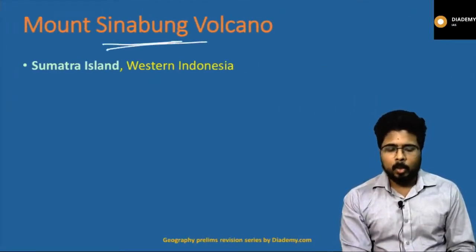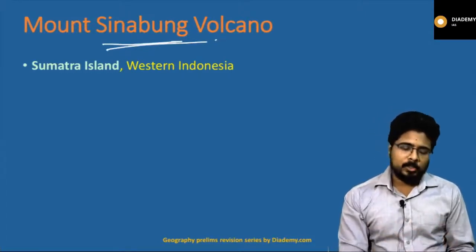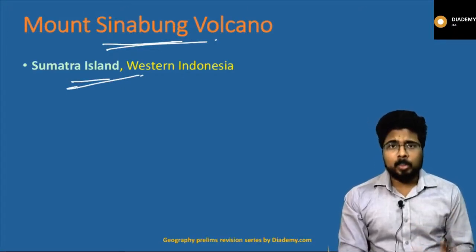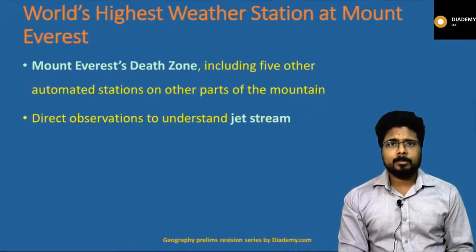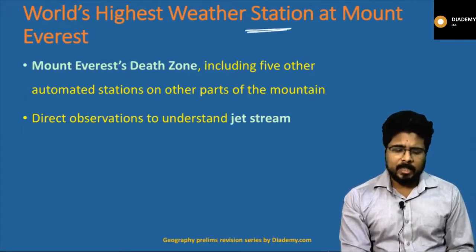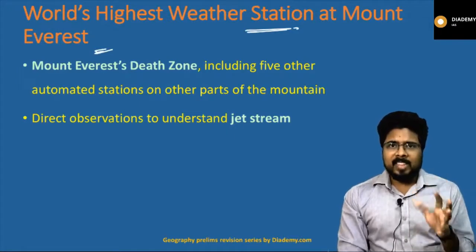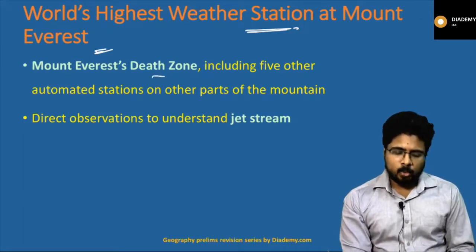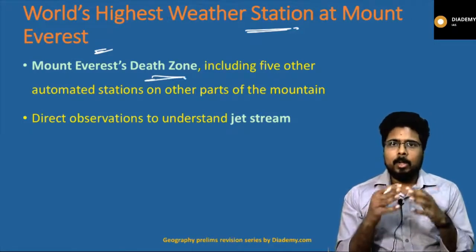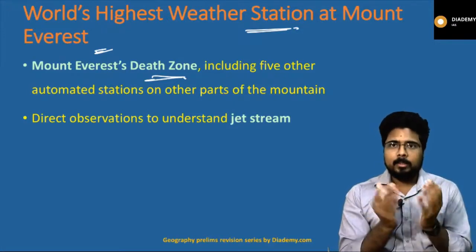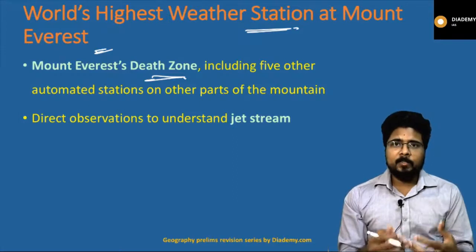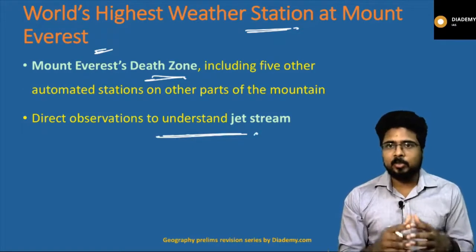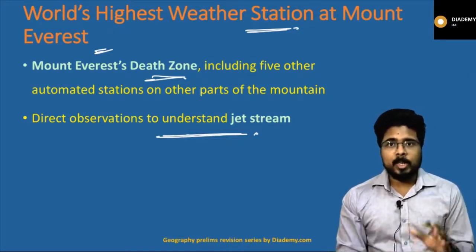Mount Sinabang was in the news because a volcano erupted. Mount Sinabang is situated in Sumatra Island in western Indonesia. Remember: Mount Sinabang is in Sumatra Island, Indonesia. Next: the world's highest weather station is going to be set up at Mount Everest, in the death zone, along with five other locations around Mount Everest. It is placed for direct observation and to understand jet streams very well.